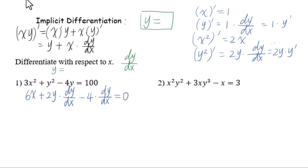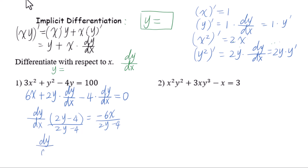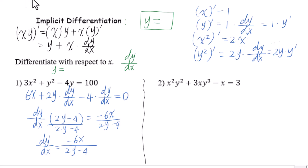We are solving for dy by dx. This is a linear equation, so isolate dy by dx on one side. Subtract 6x from both sides, then factor out dy by dx: dy by dx times (2y minus 4) equals negative 6x. Divide both sides by (2y minus 4). Final answer: dy by dx equals negative 6x over (2y minus 4).